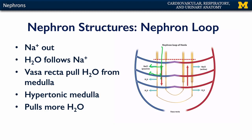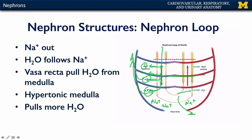Water always follows sodium, so we have an outward flux of water from the filtrate. The vasa recta pick up that water and conduct it away from the medulla, so water is now back in the cardiovascular system, leaving the sodium behind. This creates a richly hypertonic environment, and whenever there is a large buildup of sodium, that makes it even easier for water to leave. So more water leaves, is picked up by the vasa recta, and conducted away as the renal medulla becomes more and more hypertonic.